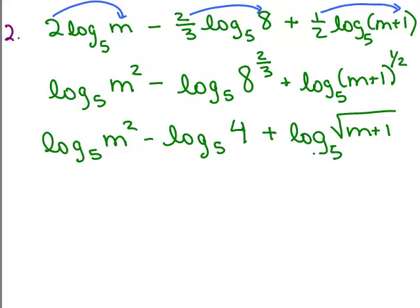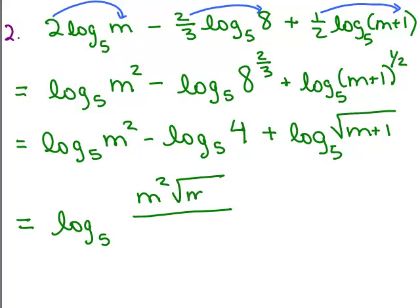Okay, so they would all have to be the same base in order to do the next step which is to combine them into a single log. The ones that have positives go in the numerator and they get to be multiplied by each other, and the one that has a minus sign goes in the denominator. So in the numerator I'll have m² times √(m + 1), and in the denominator I'll have 4, and now I've written this as a single log.